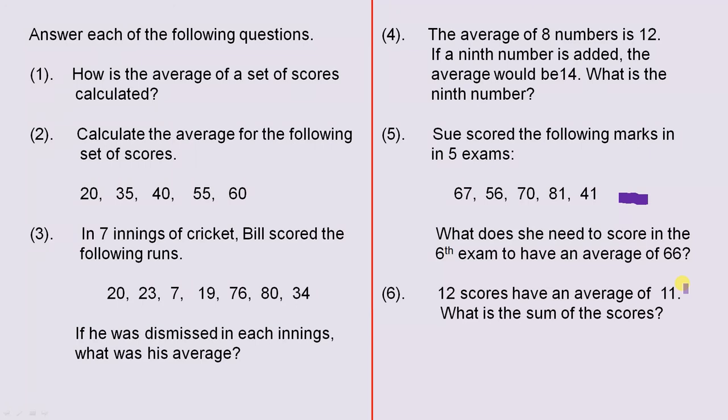And the last one: 12 scores have an average of 11. What is the sum of the scores?